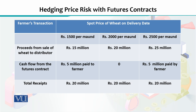The proceeds from sale of wheat to the distributor will go up from Rs. 20 million to Rs. 25 million if the price turns out to be Rs. 2,500 per maund. Similarly, if the price after one month falls to Rs. 1,500, then the total proceeds the farmer will receive from selling 4,000,000 kg of wheat would be Rs. 15 million.